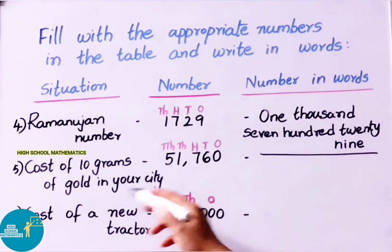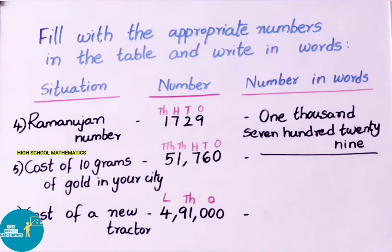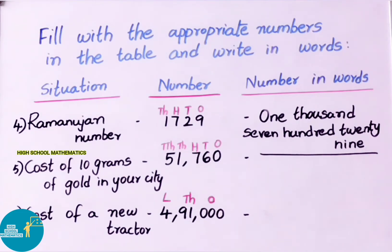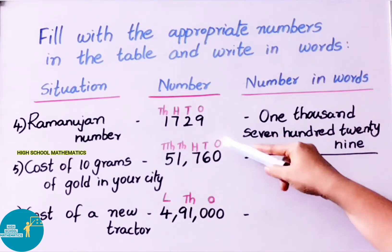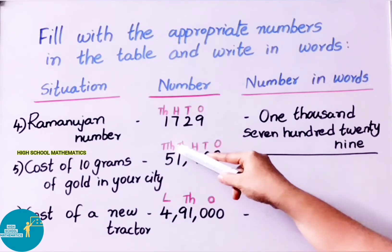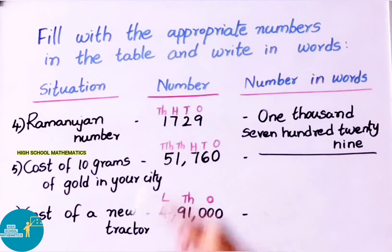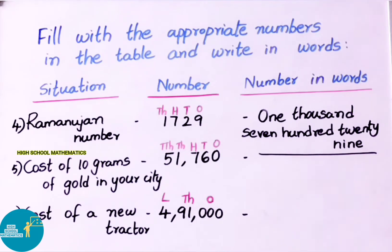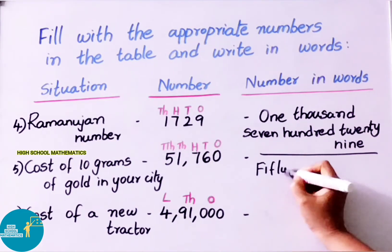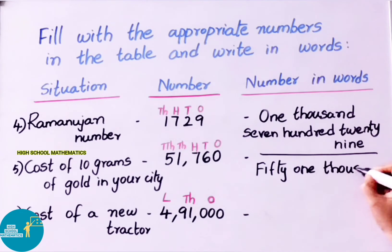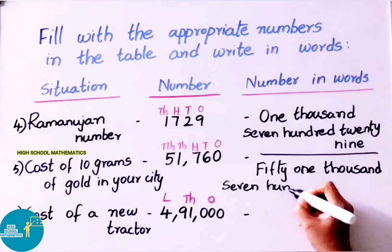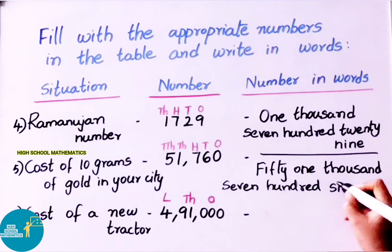Next example: cost of 10 grams of gold in your city. The approximate value is 51,760. The places are: ones, tens, hundreds, thousands, and ten thousands. Ten thousands and thousands are in the same period. The number breaks down as: 51,000 in the thousands period, plus hundreds place: 7 → 700, plus tens place: 6 → 60.